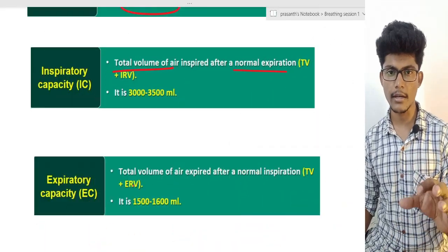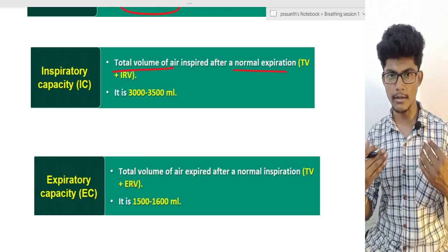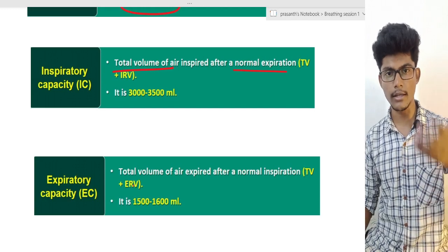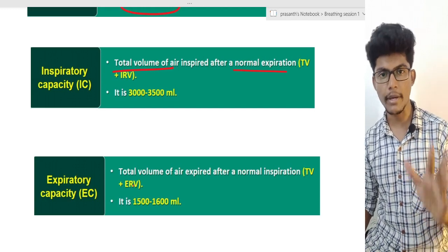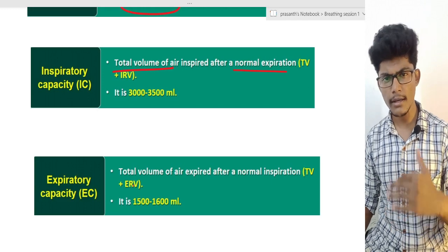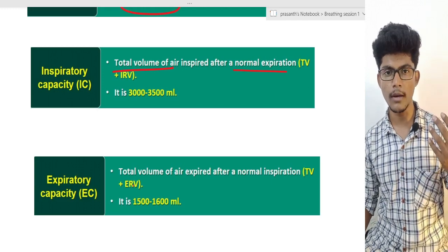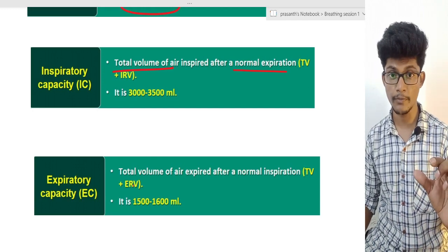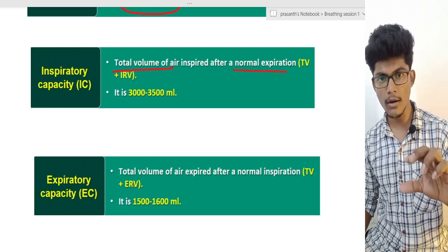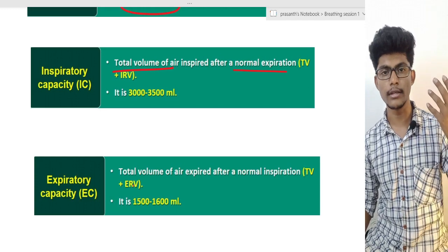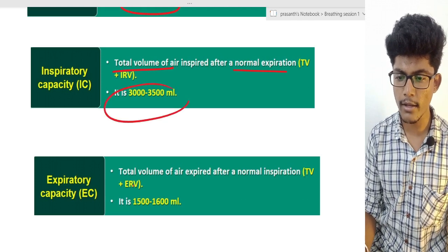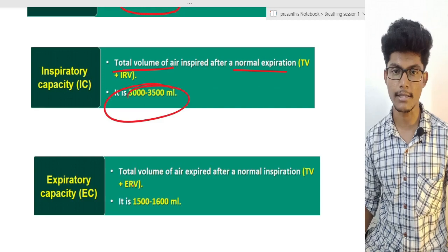Inspiratory Capacity — this refers to how much air we can inspire. It is equal to the maximum amount of air we can take into our lungs. How much air can we put in at maximum? That is called Inspiratory Capacity — it equals Tidal Volume plus Inspiratory Reserve Volume. So we can get high volume of oxygen or air with this capacity.